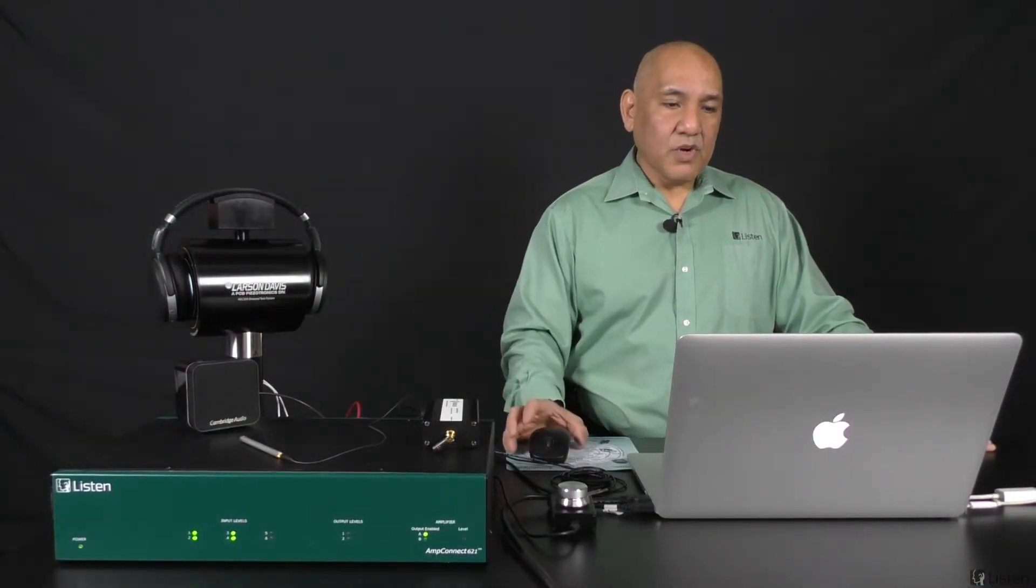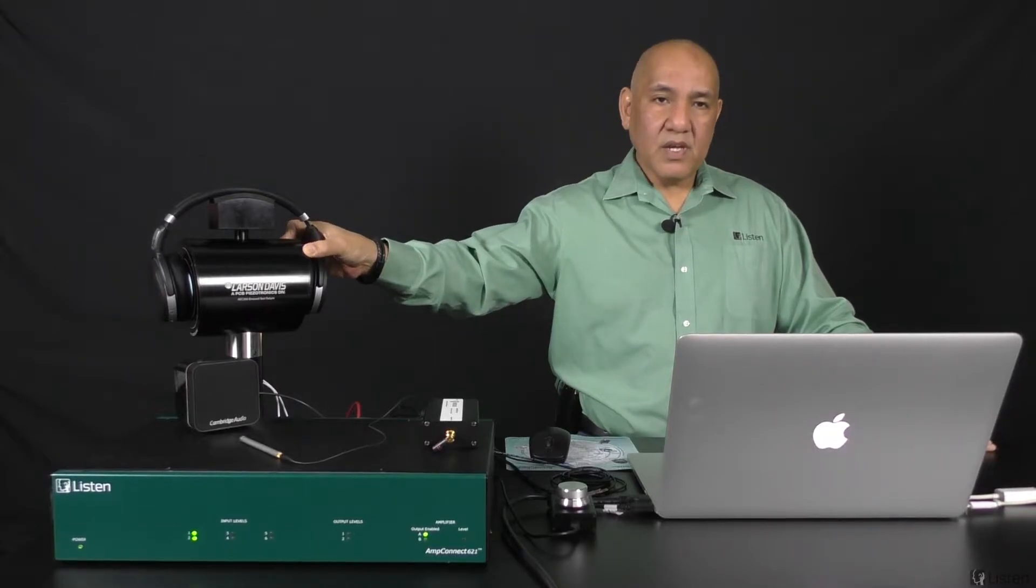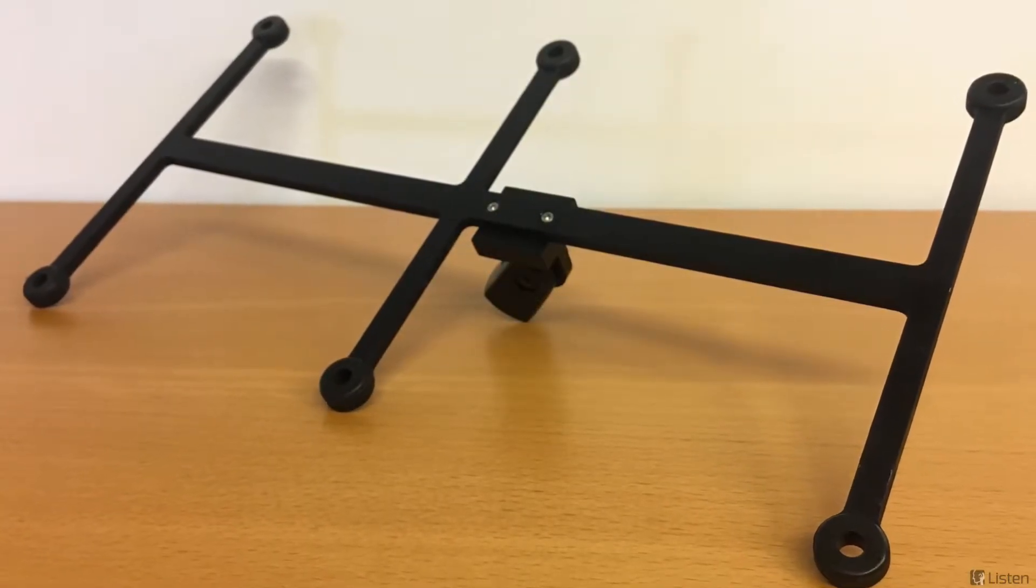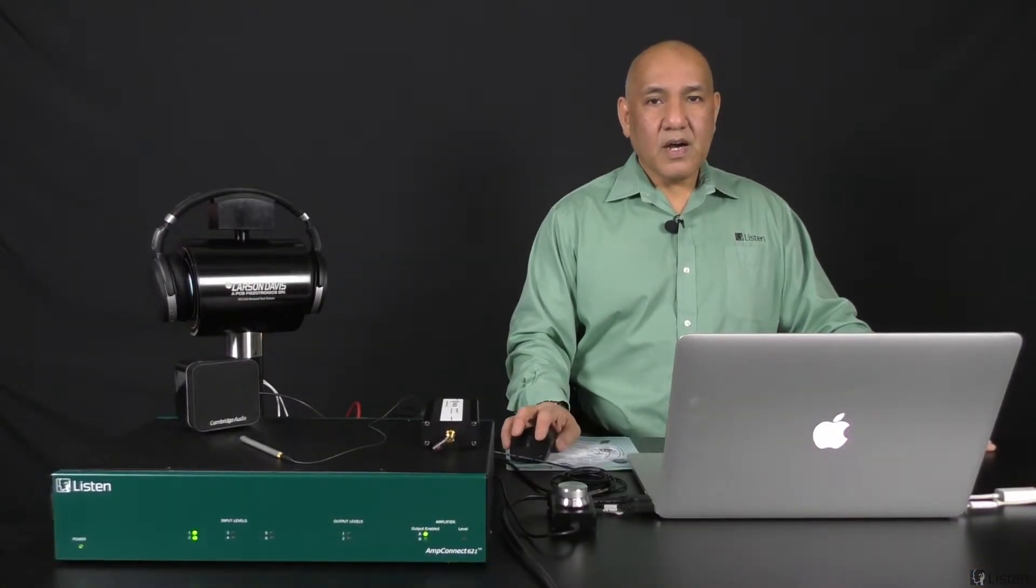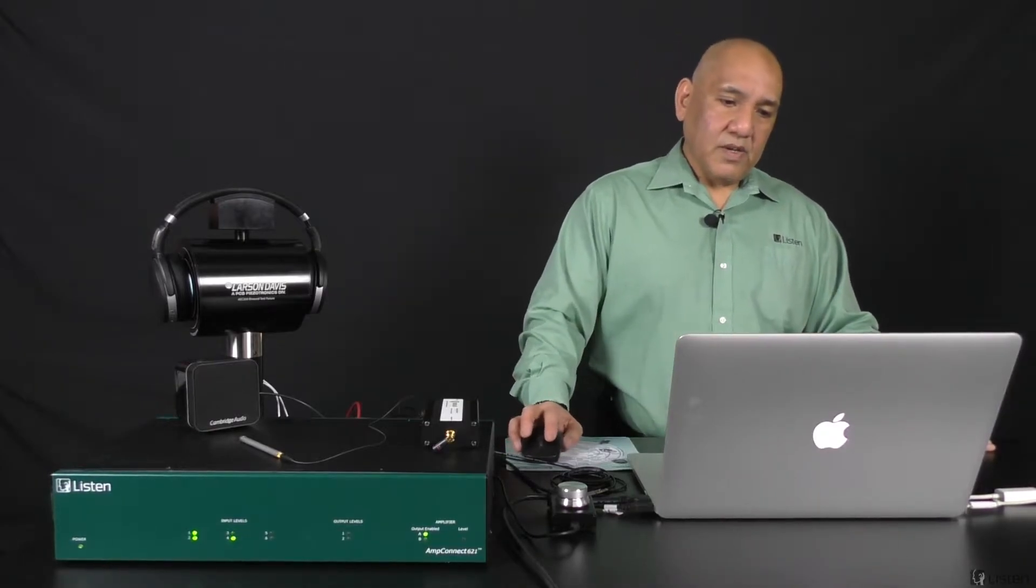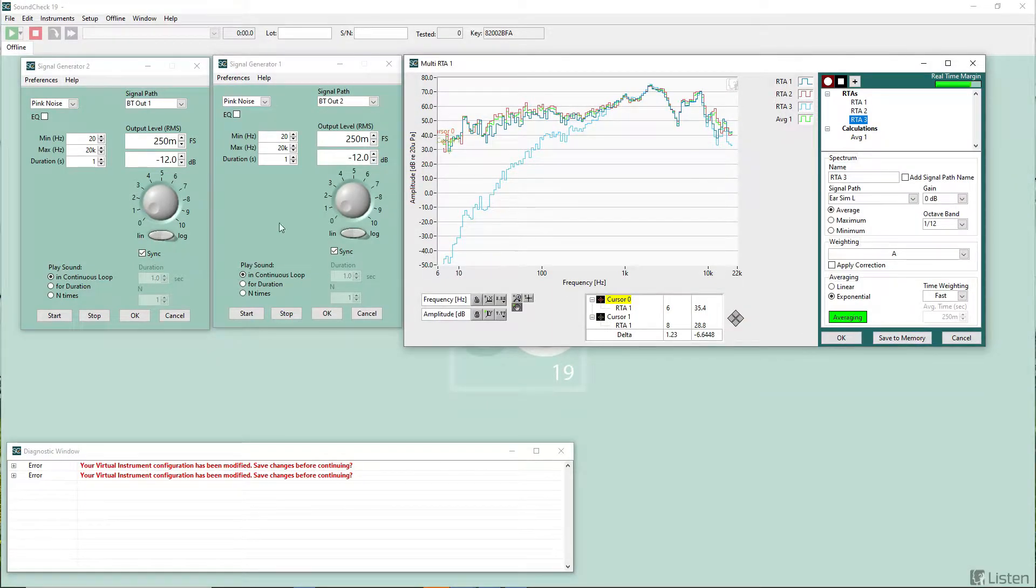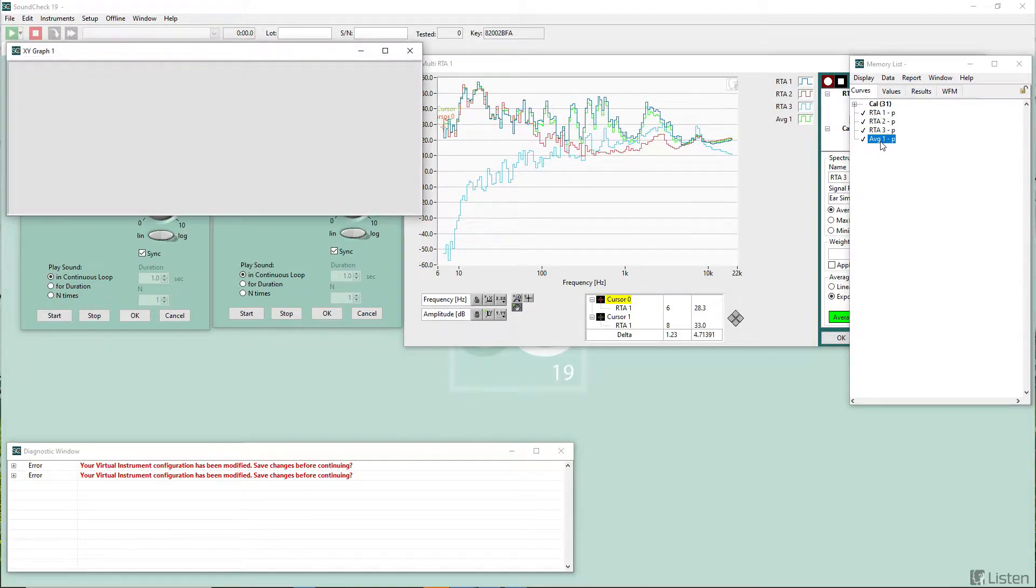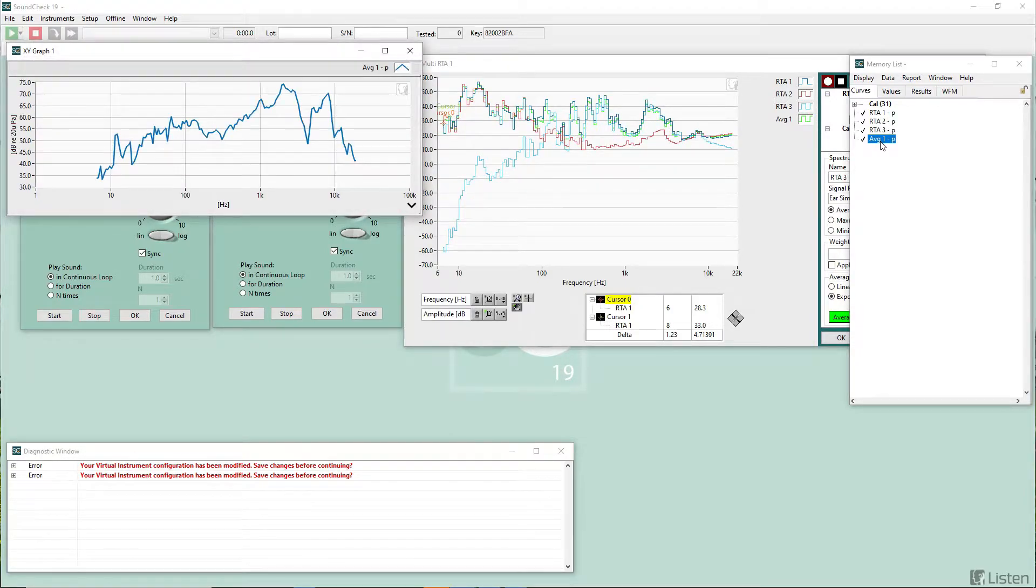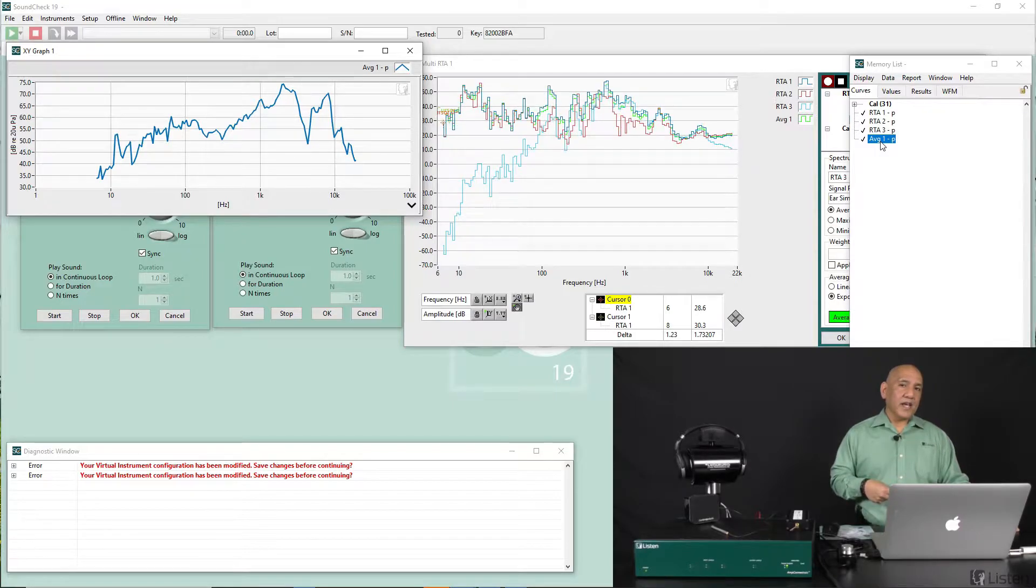So that's the Multi-RTA. One other really useful application might be a six-microphone array in an automobile tuning application. So you can tune and get feedback in the RTA in real-time. Very much like the existing RTA, I can also save these curves to my memory list. Here's my average on an X-Y graph. And like all of our other instruments, this can be applied as a step in a virtual instrument acquisition.